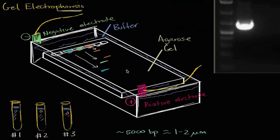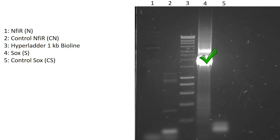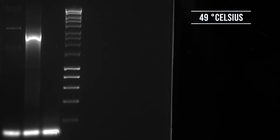Once this was performed, gel electrophoresis was undertaken to confirm or falsify successful PCR cloning. For one of my plasmids, SOX9, I had successfully cloned the primers into the DNA backbone. However, for NFIB, no band was seen, meaning that PCR cloning had not been successful. After modifying the annealing temperatures for PCR, we as a team managed to successfully insert the primers necessary for NFIB cloning.